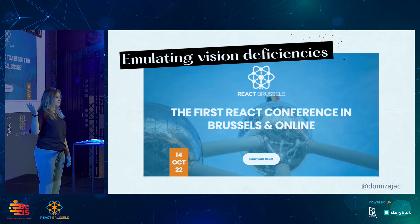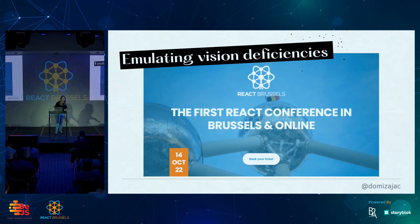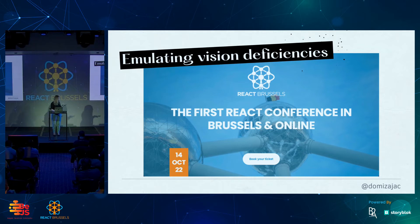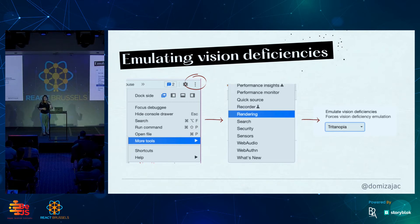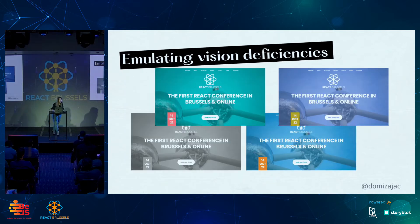Have you ever seen this page? According to the Colorblind Awareness Association, one in 12 men and one in 200 women in the world see it differently because of colorblindness. For some of them, your web page will look quite different. You can easily emulate how any web page will look for people with different vision deficiencies using a few steps: go to More Tools, find the Rendering section, and choose one of the options in the dropdown. Thanks to that, you can see and experience it on your own eyes.